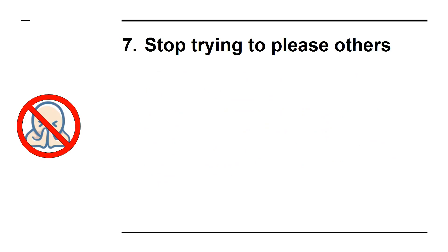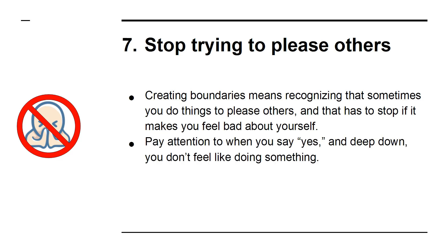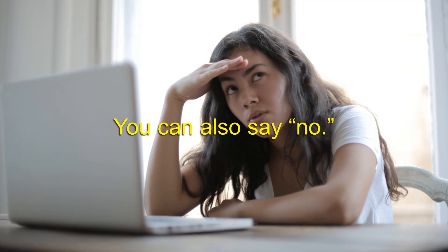7. Stop trying to please others. Creating boundaries means recognizing that sometimes you do things to please others, and that has to stop if it makes you feel bad about yourself. Pay attention to when you say yes, and deep down, you don't feel like doing something. Take the courage to stop trying to please others. For example, if somebody asks you to do something for them and you don't feel it's aligned with your needs, just say that it's not a good time for you. You can also say no.